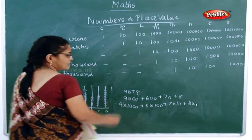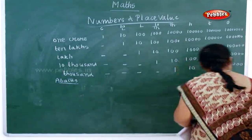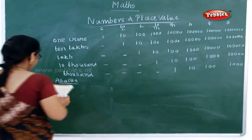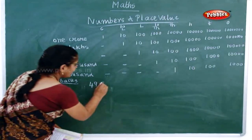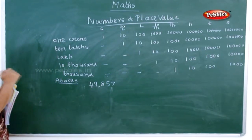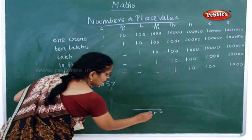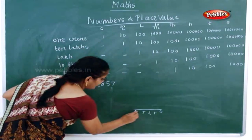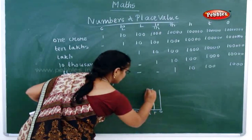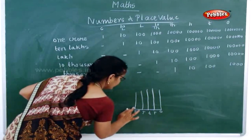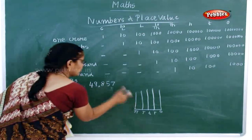Now one more — I told you in thousands. Now we will go for ten thousand. We will go on with 49,857. How will you show it in your abacus? Ones, tens, hundreds, thousands. And after one thousand what did I tell you? Ten thousand. Now how will you show this 49,857 here?